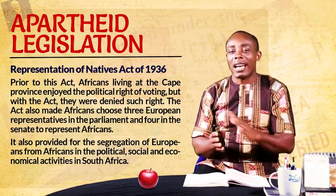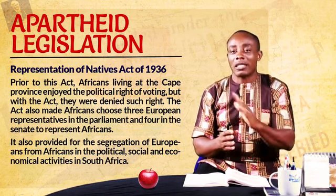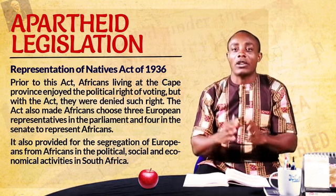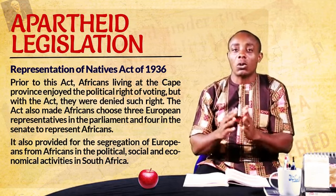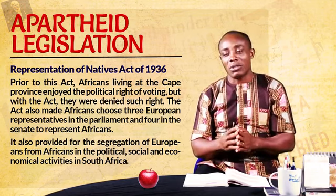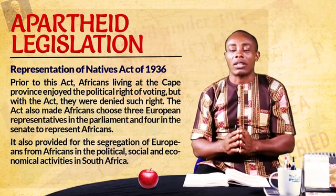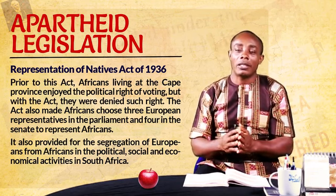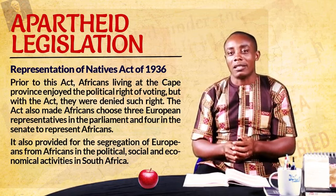This act denied the blacks — Africans — of participation. You are from this place and you are not allowed to vote, you are not represented, and you are now choosing somebody — a foreigner, a white man — to represent you. This was quite unfair, but it was established in South Africa under the Representation of Native Act of 1936.